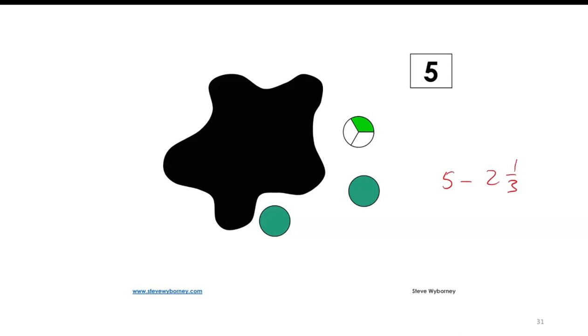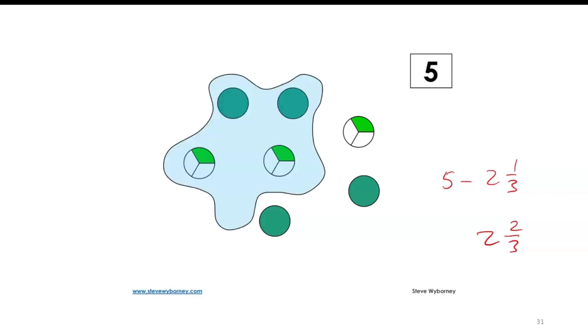In order to subtract, you can do this by subtracting mixed numbers, or you can think of it that I have one third. I would need two thirds more to get a whole. Two and a third and two thirds is three. From there, I would need two more. So what's underneath this splat has got to be two and two thirds. If I check, that's exactly what's underneath the splat.